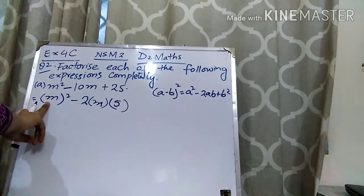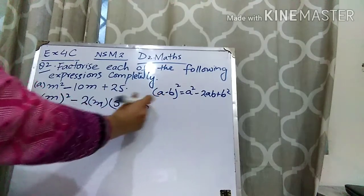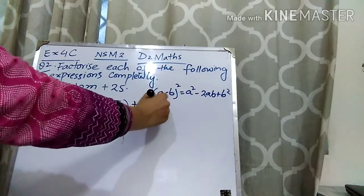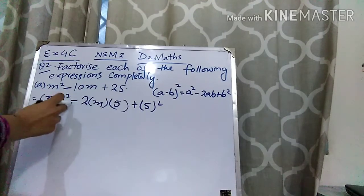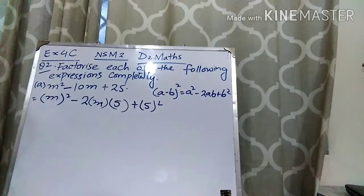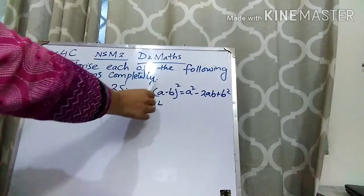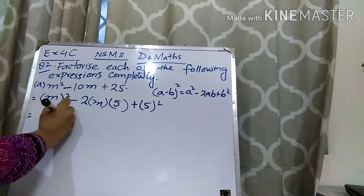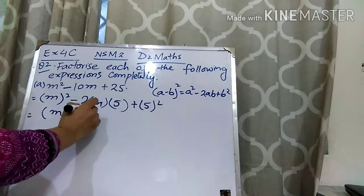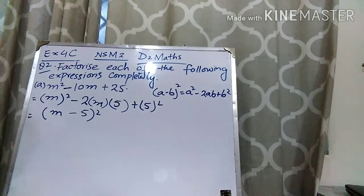So A squared minus 2AB plus B squared, where B is 5. We have made the formula: A squared minus 2AB plus B squared, which is equal to A minus B whole square. So this is equal to A minus B whole square. I hope that part A is clear to you. Let's come to part B.